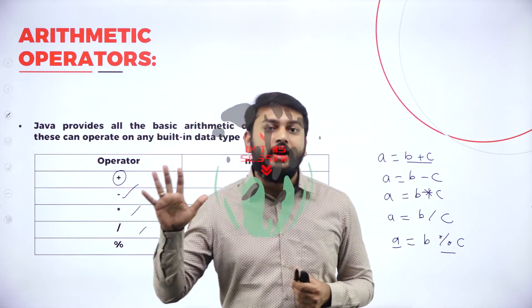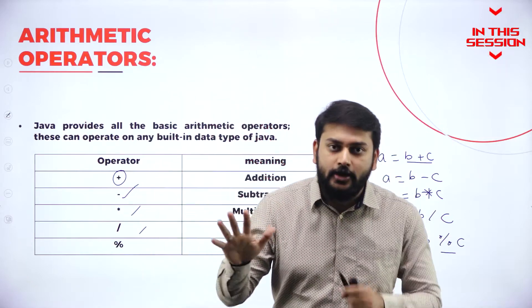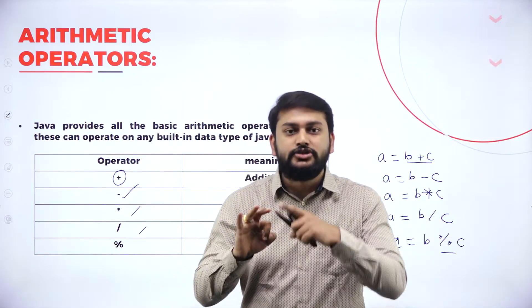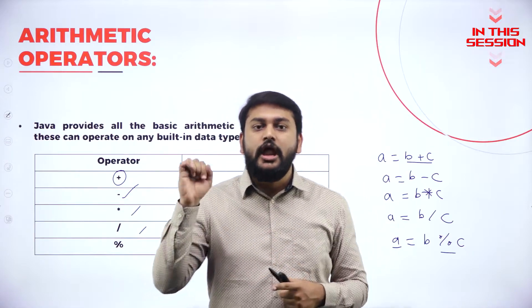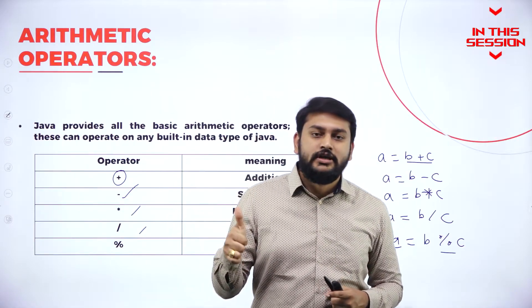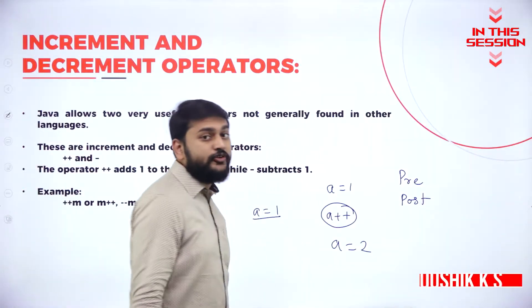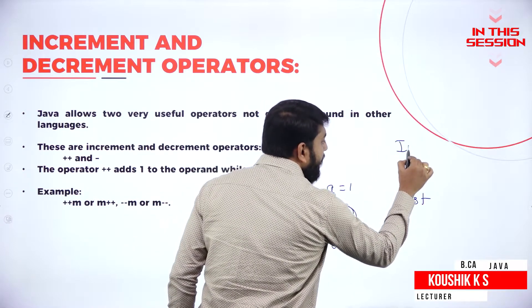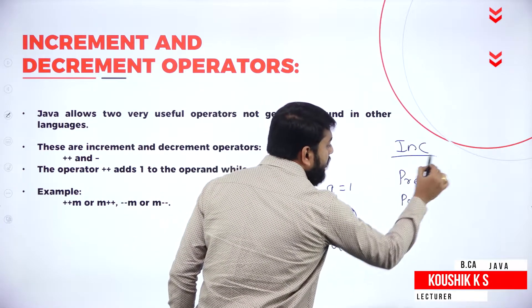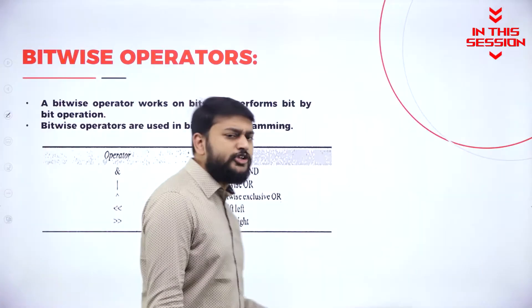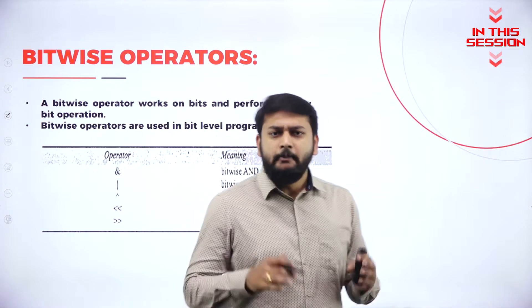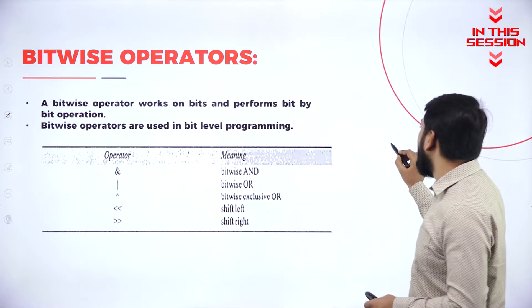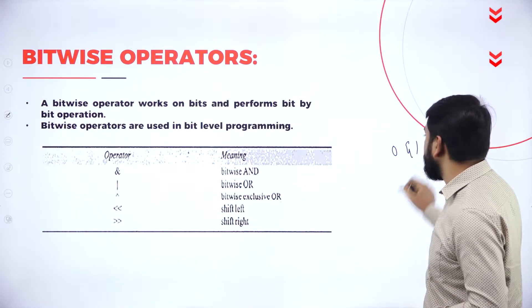There are five different types of arithmetic operators: addition, subtraction, division, multiplication, and modulus. For increment operators, we have two types: pre-increment and post-increment. Bitwise operators are mainly used to deal with binary bits — zeros and ones.